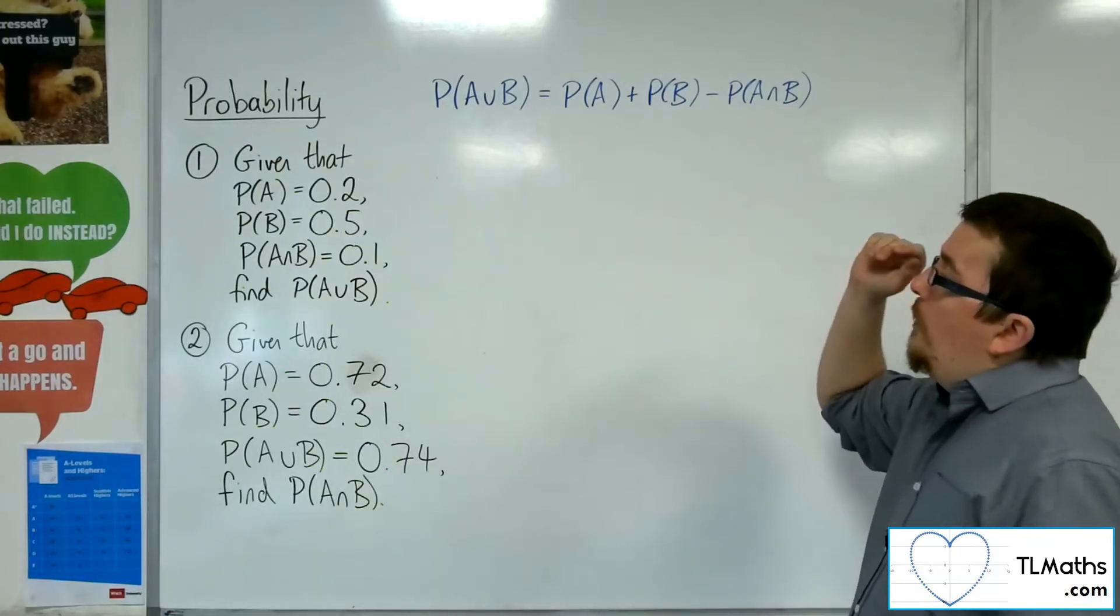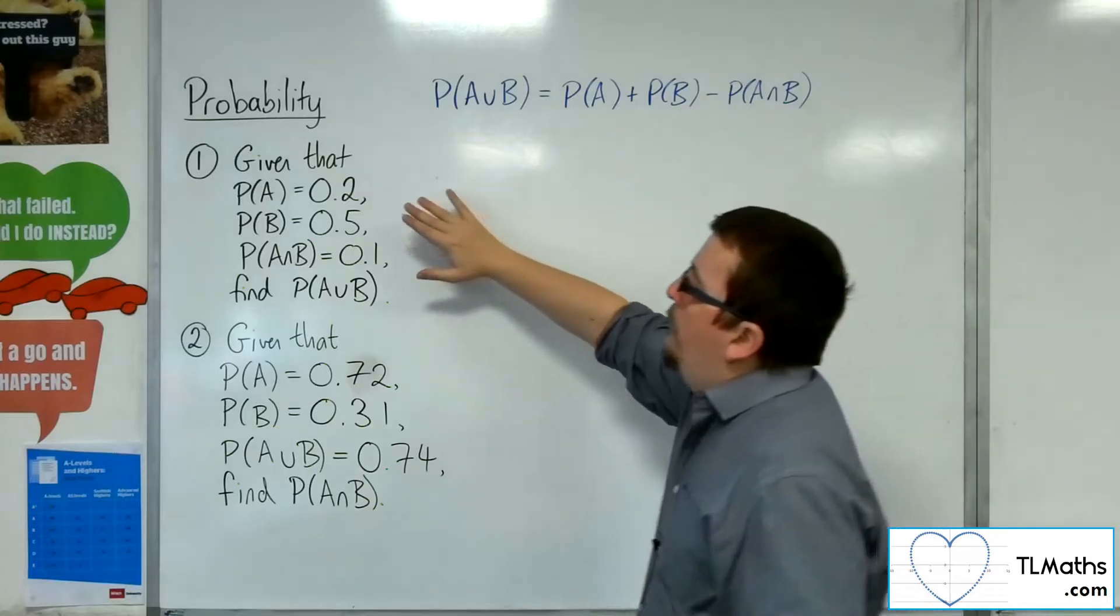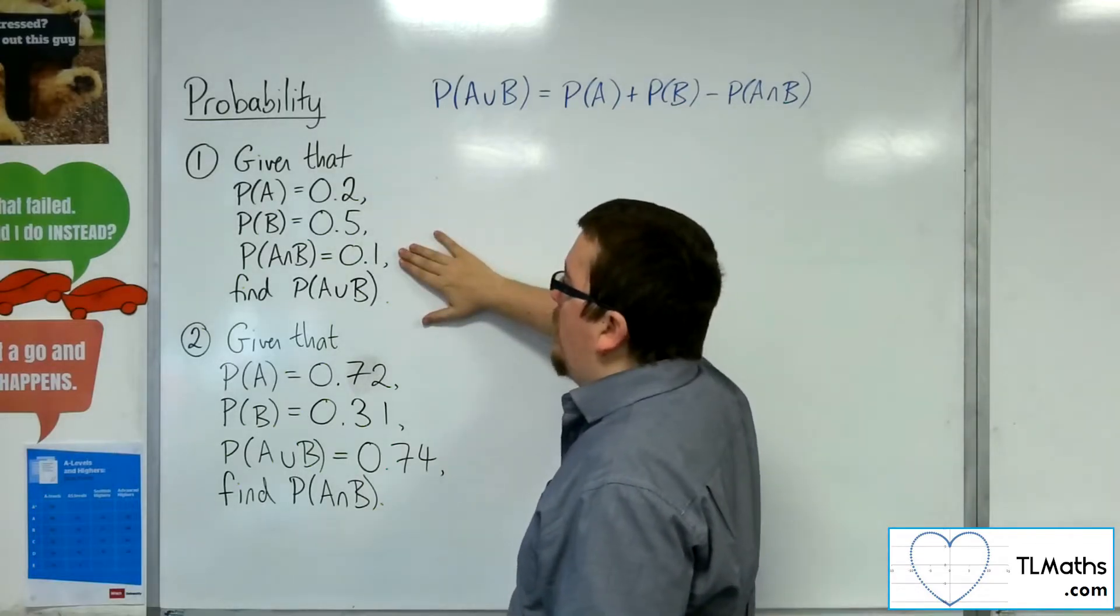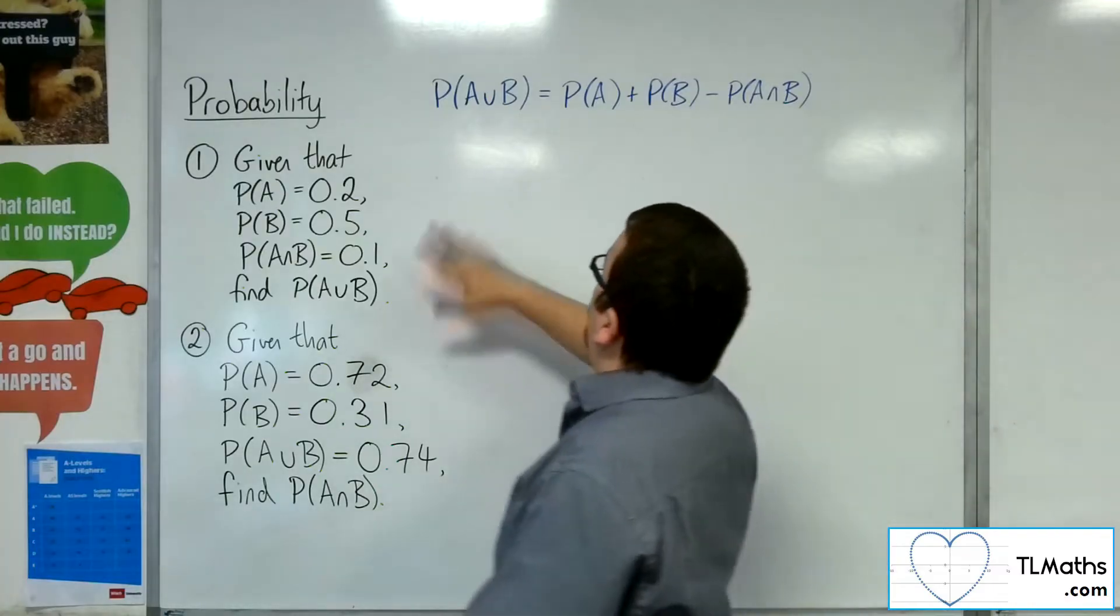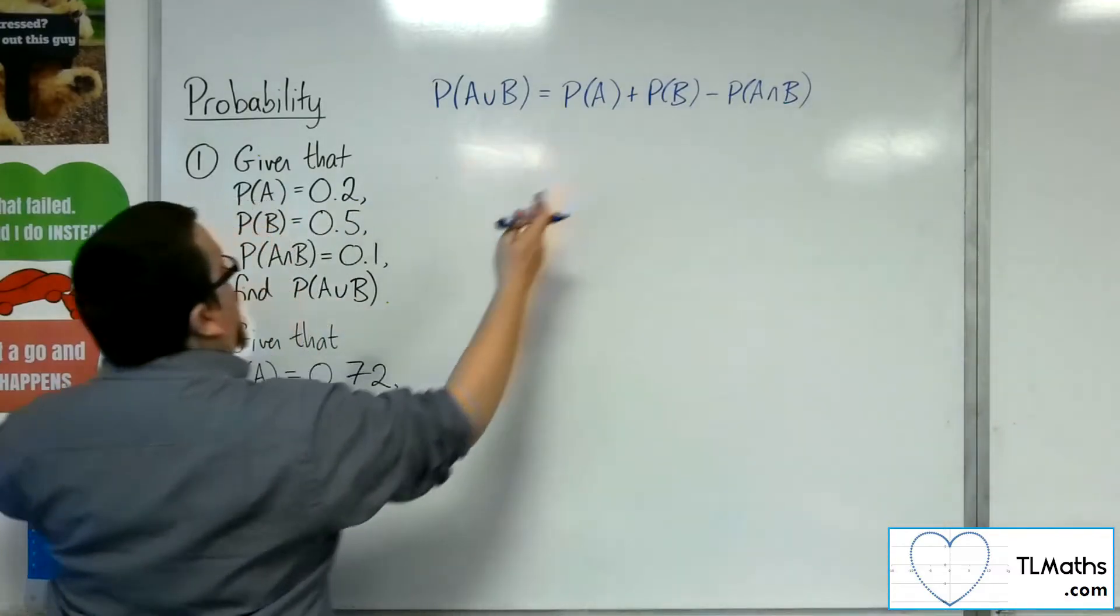So for number one, we've got probability of A is 0.2, probability of B is 0.5, probability of A intersection B is 0.1, and we want to find the union. So we could just go directly into using the formula here.